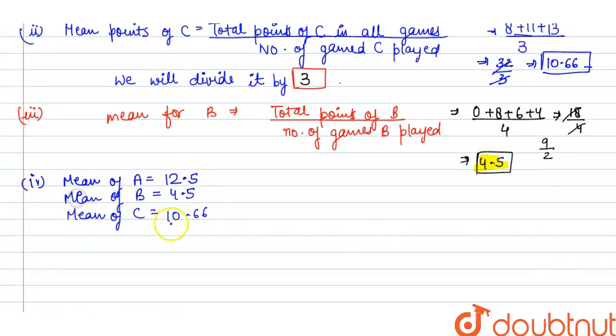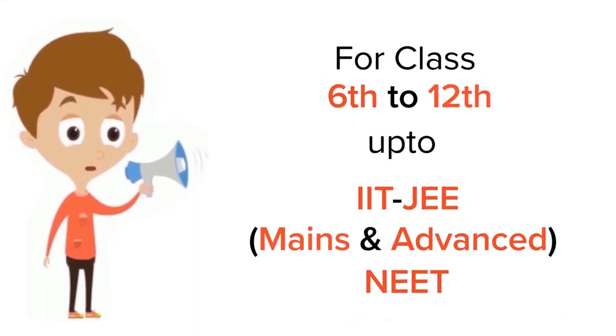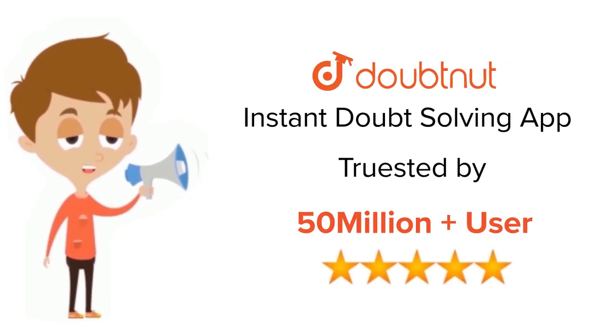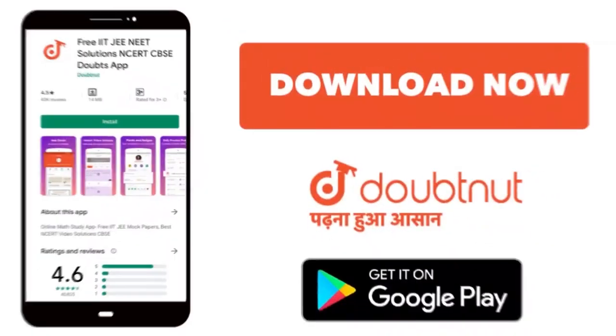So here 3 players total. It is clear that whose mean is highest. Player A mean is highest. Since the value of player A mean is highest, we can say A is the best performer. This is the final answer. I hope you understand the question. For class 6 to 12, IIT-JEE and NEET level, trusted by more than 5 crore students, download Doubtnet app today.